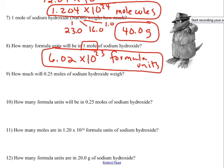How much will 0.25 moles of sodium hydroxide weigh? 0.25 is the same thing as a quarter. If one mole weighs 40 grams, then a quarter of a mole of sodium will weigh a quarter of 40 grams, which is 10.0 grams.